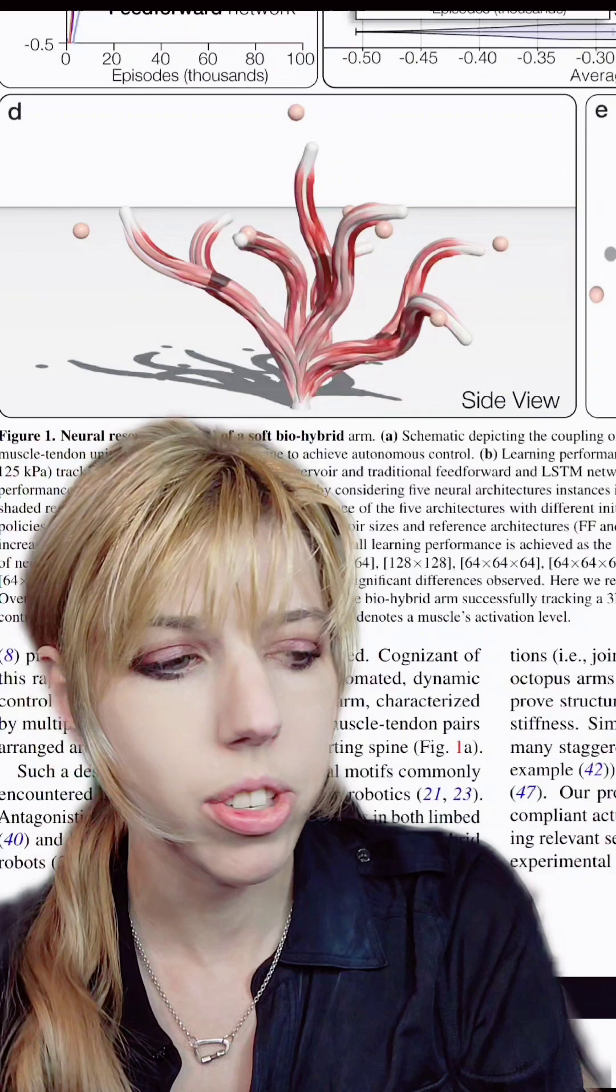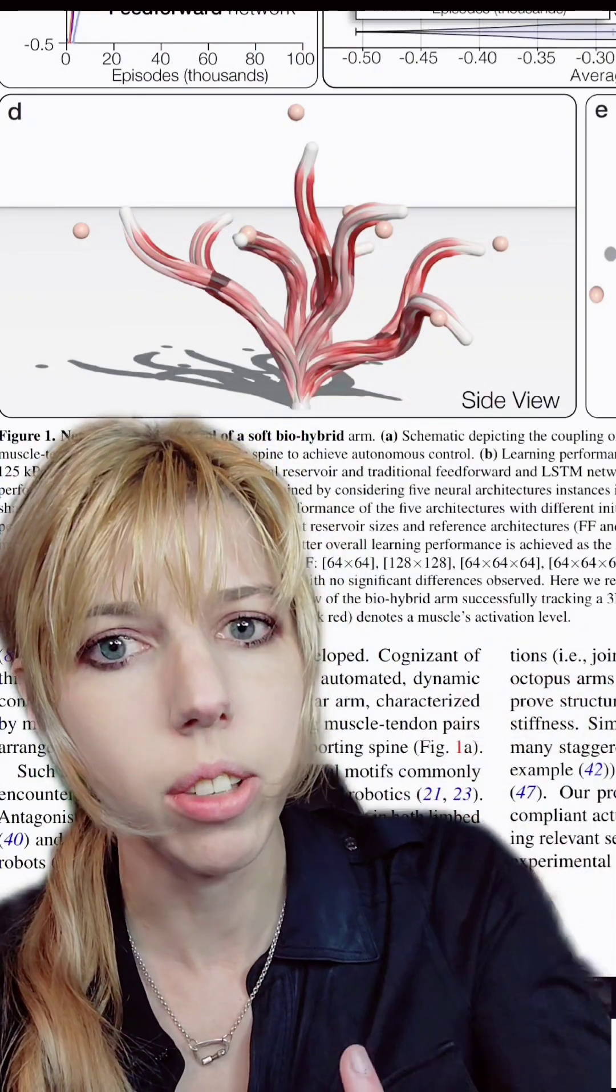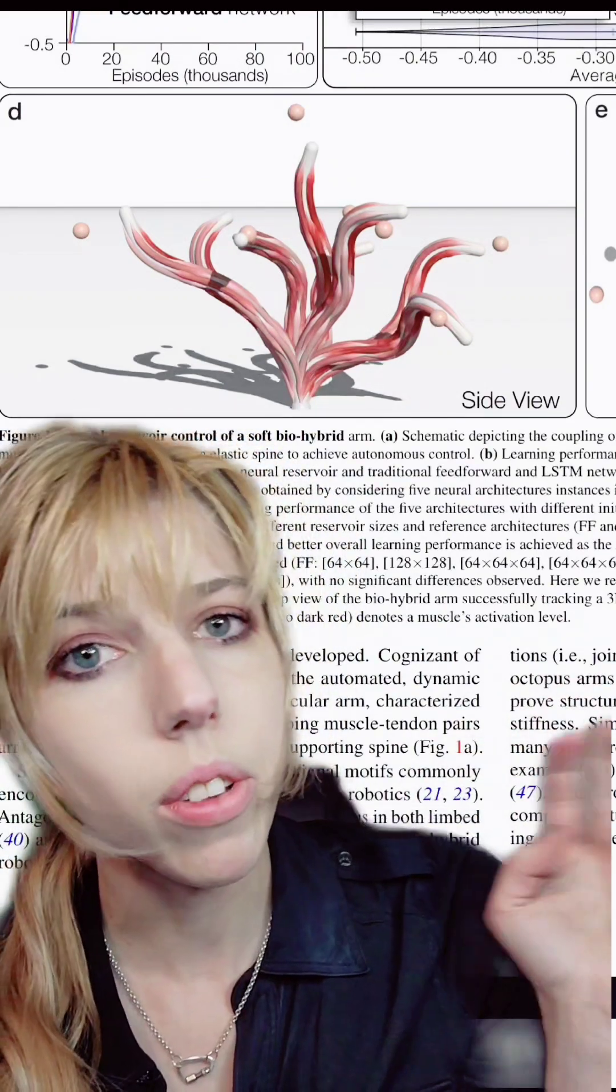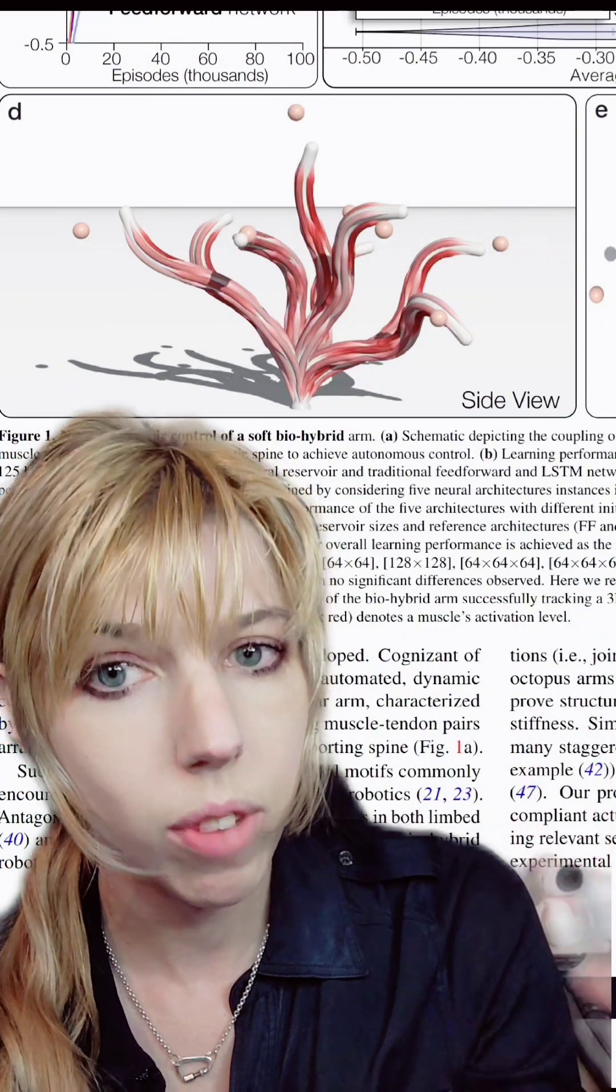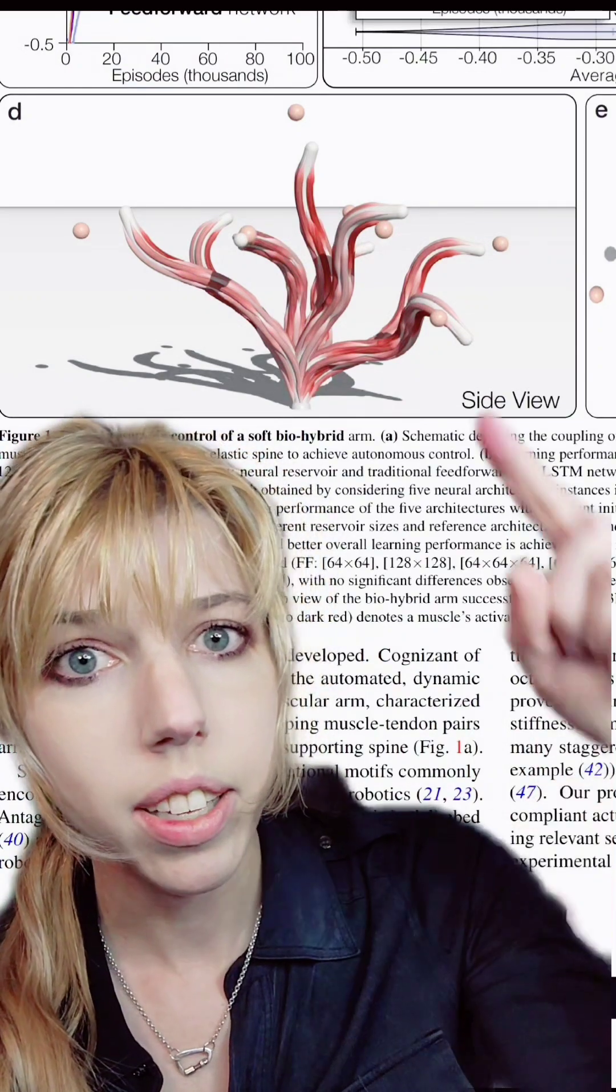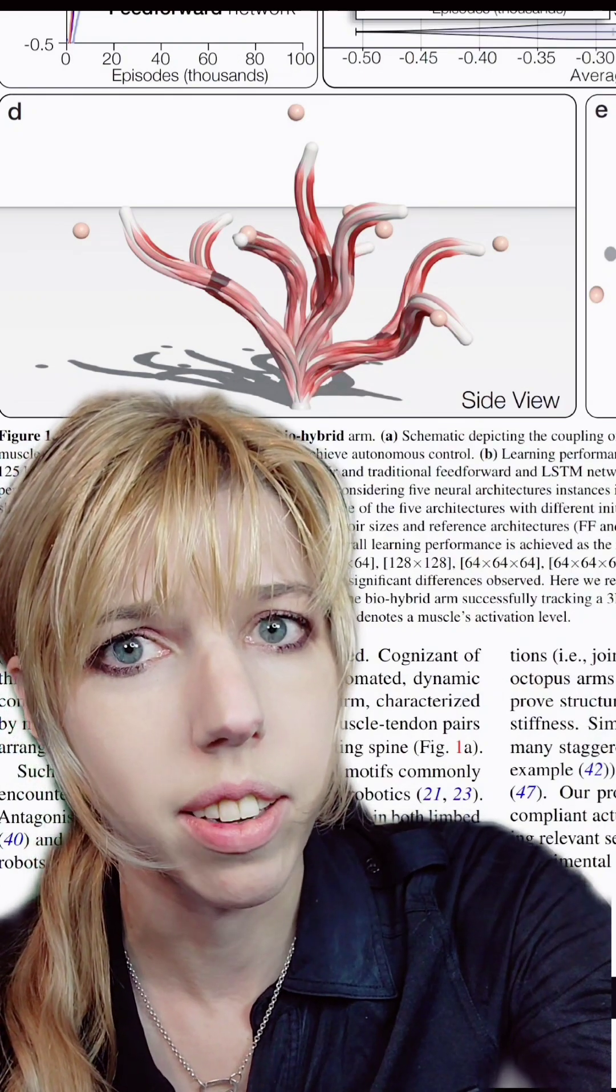And that's exactly what researchers did when they created this flesh-tentacle-eldritch horror. Each one of those muscle-fibrous arms are controlled by an individual virtual brain organoid. You can even see them floating there for some reason.